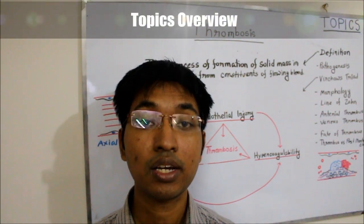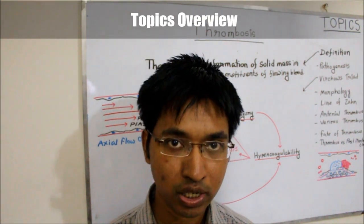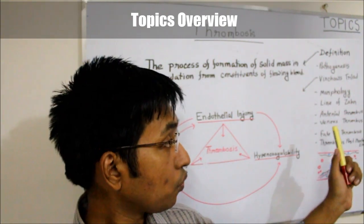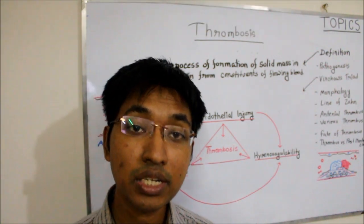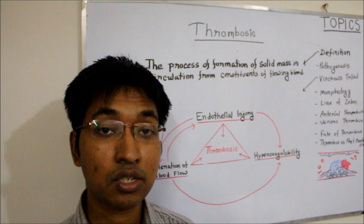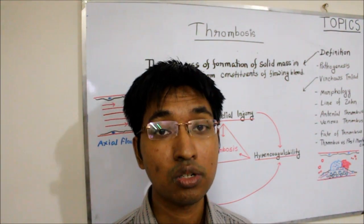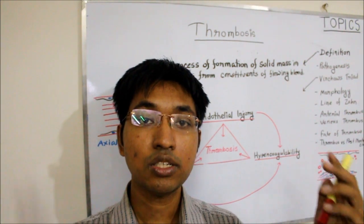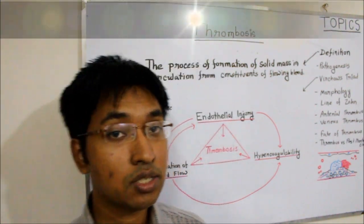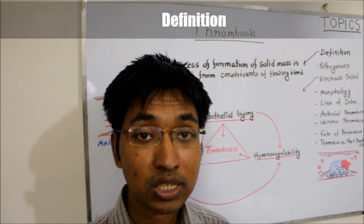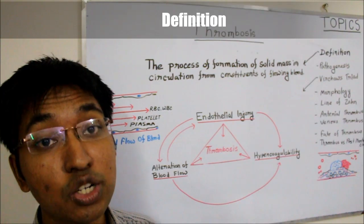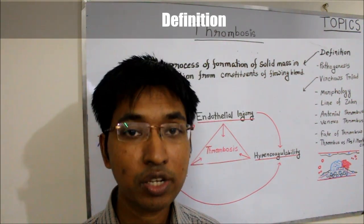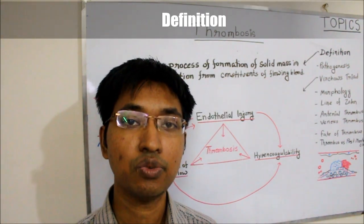In this video, first we will try to define thrombosis, then we will discuss its pathogenesis, which will obviously include discussion on Virchow's triad, followed by a discussion on morphology of thrombus, lines of Zahn, arterial thrombus, venous thrombus, fetal thrombus, and at the end we will also discuss briefly about the difference between thrombus and post-mortem clot. So thrombosis is the process of formation of a solid mass in uninterrupted cardiovascular system or in uninterrupted circulation from the constituents of flowing or streaming blood. And the solid mass itself is called thrombus.